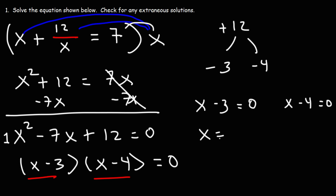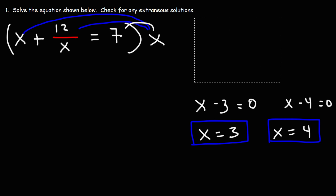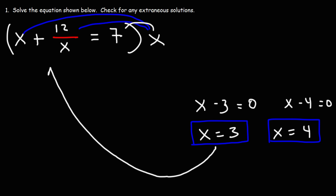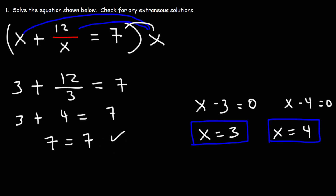Adding 3 to both sides, we get x equals 3. For the second equation, adding 4 to both sides, we get x equals 4. So those are the two solutions after solving this equation. Now we need to check both answers in the original equation. Plugging in x equals 3: 3 plus 12 over 3 equals 7. 12 divided by 3 is 4, and 3 plus 4 is 7. Since 7 equals 7, the first solution works — it is not an extraneous solution.